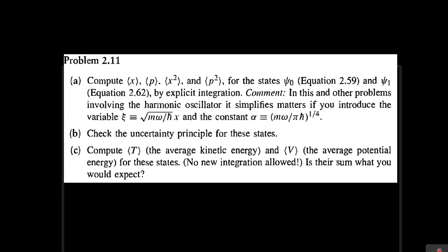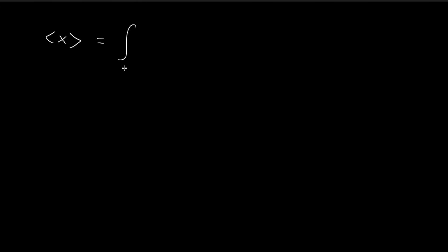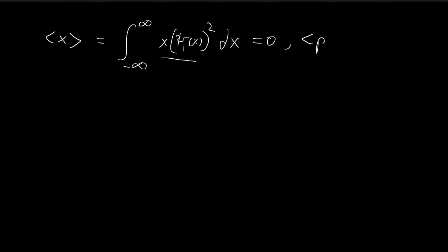Now we're going to move on to ξ₁, and this time we're going to find three expected values first. The formula for the expected value of x: once again we have the wave function and the time components cancel out because of the conjugate, and in the end you get x multiplied by ξ₁ squared dx. This is an odd function, so this is going to be equal to 0, and that is why the expected value of p is also going to be equal to 0.